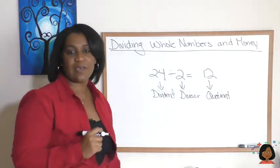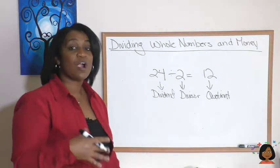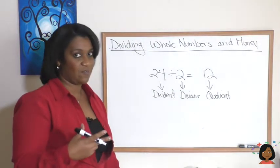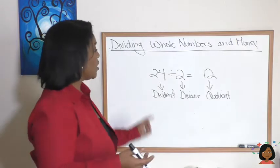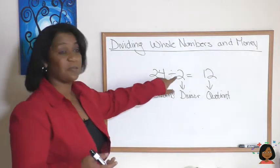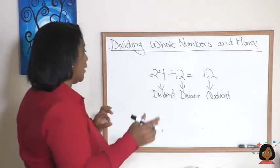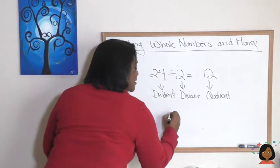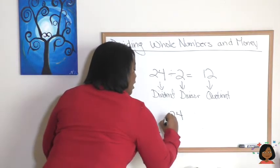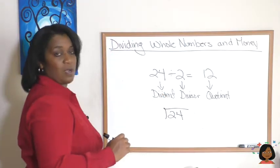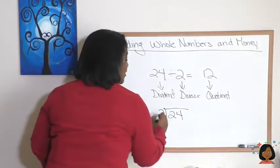Now, here's the interesting thing about division. There are many ways that we can write division. Three in particular. So you've seen one. 24 divided by 2 equals 12. Let's write 24 and 2 in a different way. We could also write it like this. 24, and we have our little division bar, and we put our 2 on the outside.